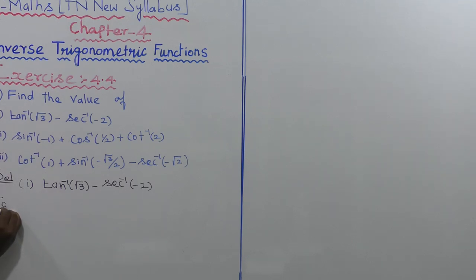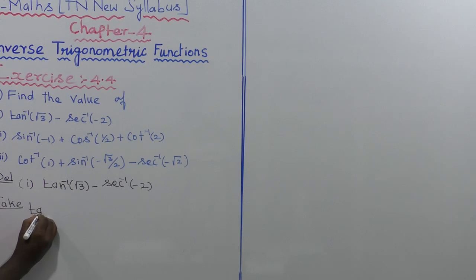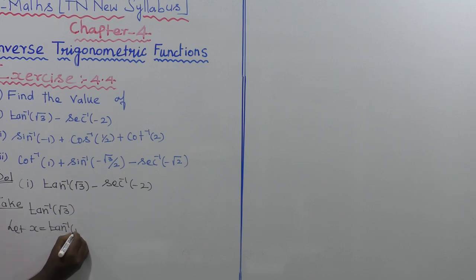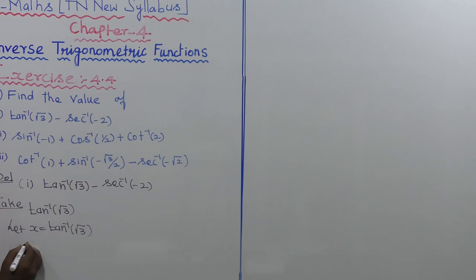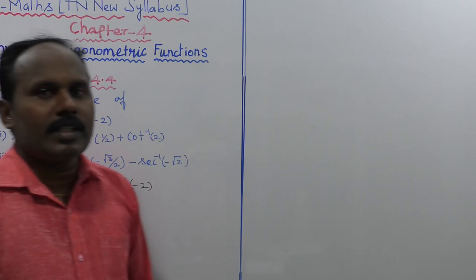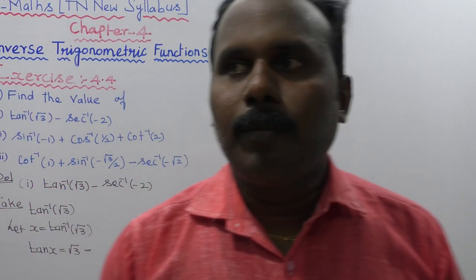Let us take the given values. The first term is tan inverse of root 3. Let us consider x equal to tan inverse of root 3. Moving tan to the right side, we get tan x equal to root 3. Now, root 3 is the value of tan 60 degrees, that is tan of pi by 3.